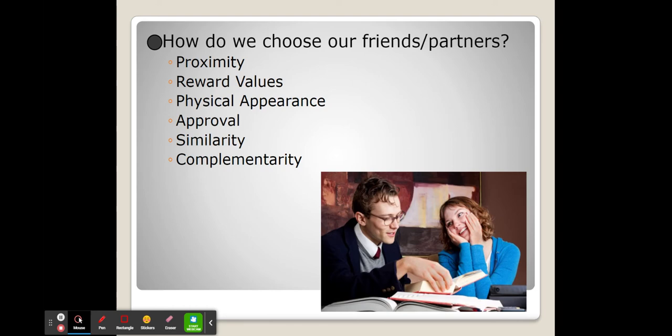The third one is physical appearance, and this just isn't romantic attraction but interpersonal friendships too. We often will pick people who we perceive to be our same level of attraction when we are picking our friends. The fourth one is approval, and this is when someone doesn't necessarily give you a gift or reward but encourages the behavior that you're doing and validates it and makes it feel like it's the right thing to be done.